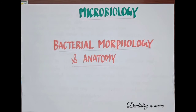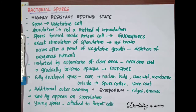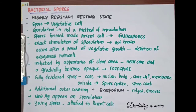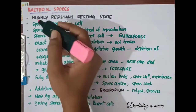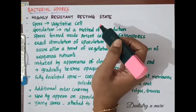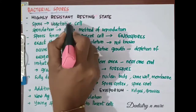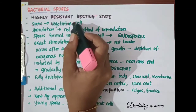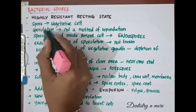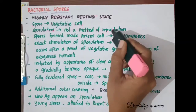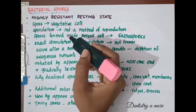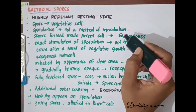Hello all, continuing with bacterial morphology and anatomy. Today's topic is bacterial spores. Some bacteria, like members of the genera Bacillus and Clostridium, have the ability to form highly resistant resting stages called bacterial spores. Each bacterium forms one spore, and this spore on germination forms a single vegetative cell. This process is called sporulation, and in bacteria it is not a method of reproduction. Since bacterial spores are formed inside the parent cell, they are also called endospores.